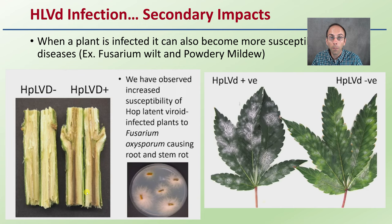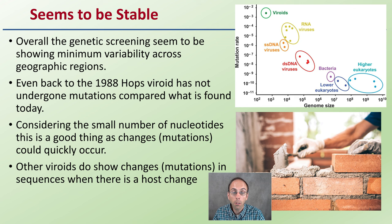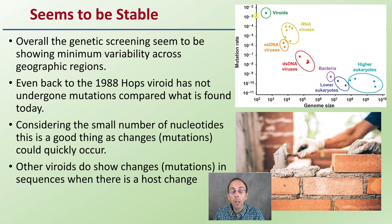This viroid does seem to be stable. Genetic screening shows minimum variability across geographic regions. Even back to the 1980s, Hop Latent Viroid has not really undergone many mutations compared to what is found today. This is notable because viroids have a small number of nucleotides, and a smaller genome size typically means a higher rate of mutation. But Hop Latent Viroid is showing stability. Other viroids do show changes and mutations when there's a host change, but early indications here show a pretty stable, consistent sequence.